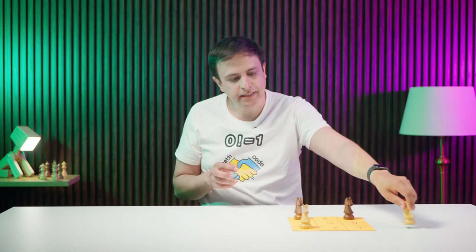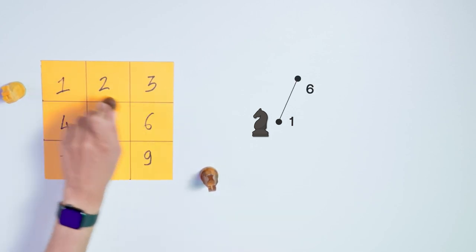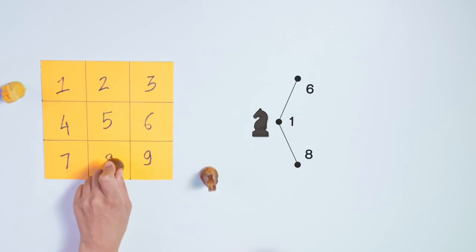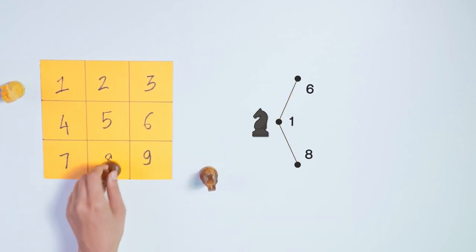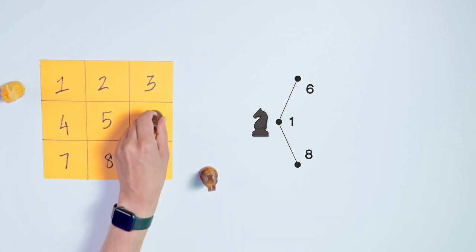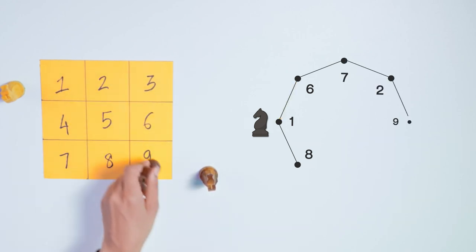Now, let's represent this grid and the knight movements in a different way. So if a knight is at 1, it can move to 6 or 8. And we can say that 1 is connected to 6 and 8. Similarly, from 6, it can move to 7 or back to 1. From 7, it can go to 2, then 9, 4, 3, 8, and it's back to 1.